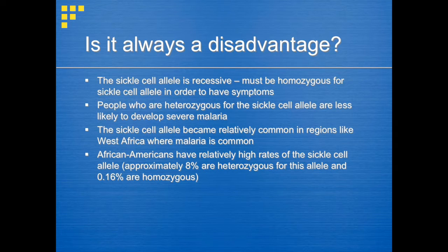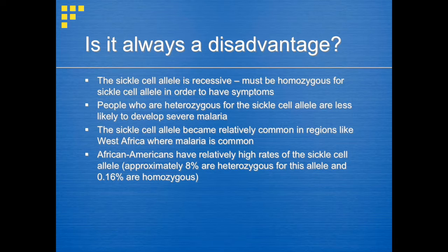A person who is heterozygous for the sickle cell and normal hemoglobin alleles usually does not have symptoms of sickle cell anemia, similar to a person who is homozygous for the normal hemoglobin allele. This is why textbooks usually describe the sickle cell allele as recessive. However, people who are heterozygous for the sickle cell allele are less likely to develop severe malaria — a red blood cell infection transmitted by mosquitoes in many tropical countries. Thus, in areas where malaria is widespread, the sickle cell allele becomes relatively common in regions like West Africa. Since African Americans are descended from those populations, approximately 8% are heterozygous for the allele and 0.16% are homozygous.